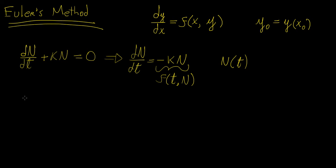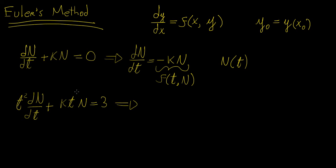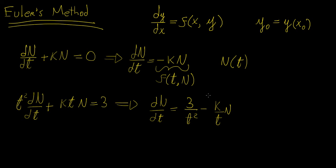For example, suppose we have t²·dn/dt + k·t·n = 3. To put this into the required form for Euler's method, divide both sides by t² and rearrange, giving dn/dt = 3/t² - (k/t)·n. This is our differential equation in the form we need, and the right-hand side is a function of both t and n.